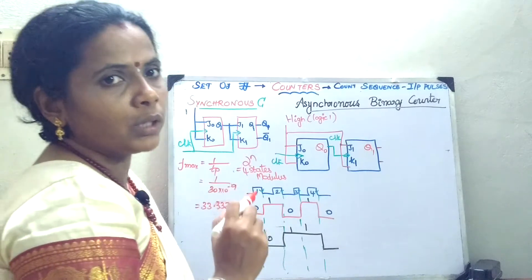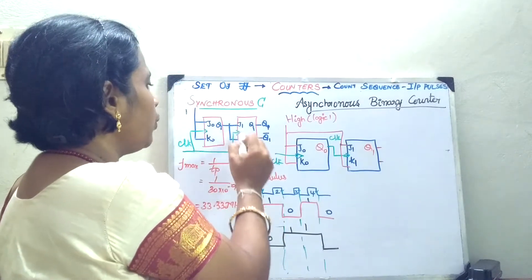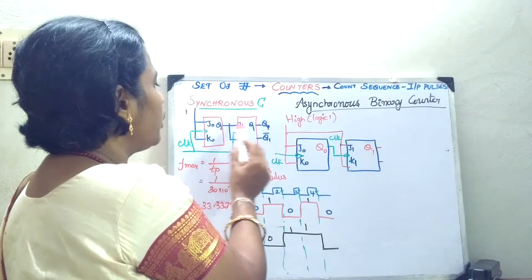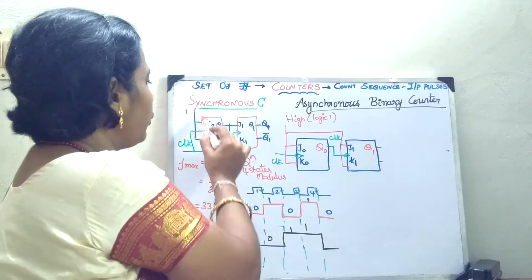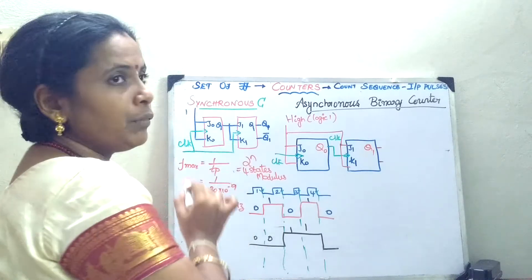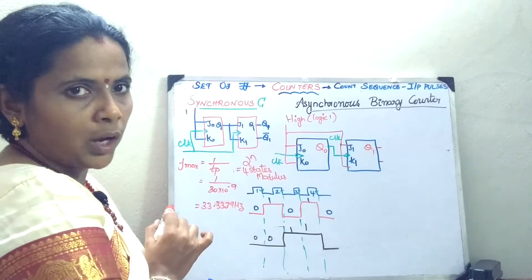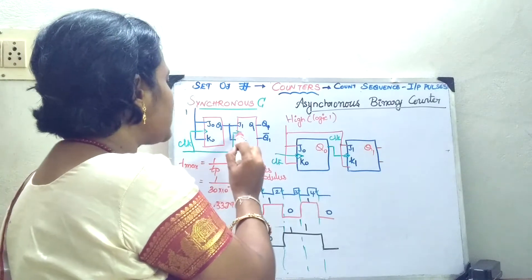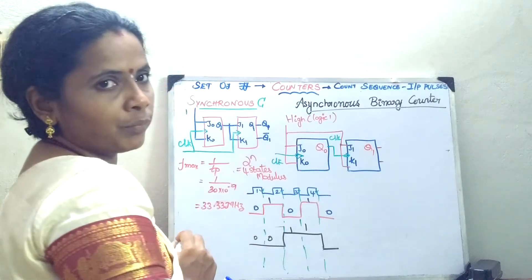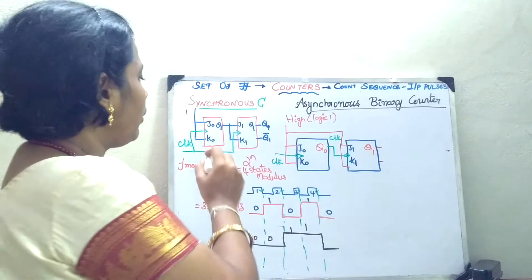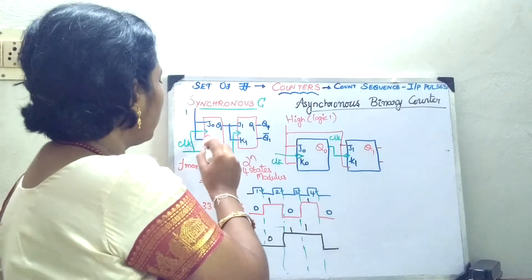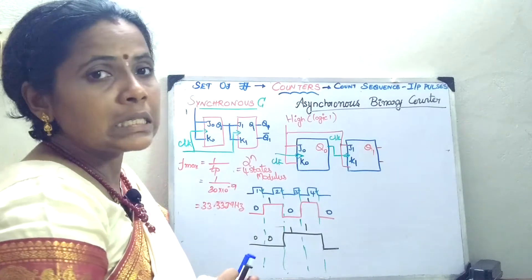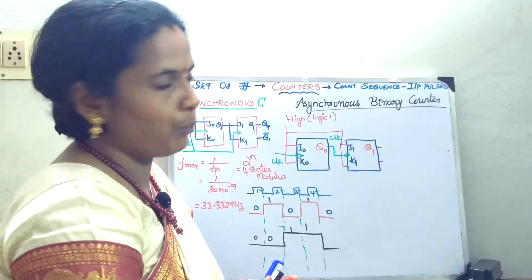For the circuit configuration, just put two flip-flops: J-naught, K-naught, J1, K1, Q. I am going to give logic high to the first flip-flop, then give the clock pulse synchronously. Whenever I am going to give the clock pulse synchronously to both the flip-flops, it is called a synchronous counter.